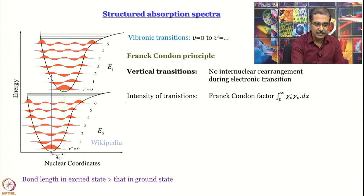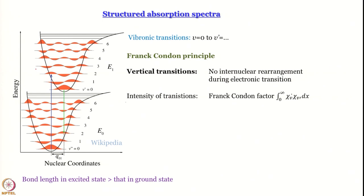This is the wave function of the target state. The Franck-Condon factor is basically this function multiplied by the ground state function for a given value of nuclear coordinate — you add them all up. Essentially, you multiply the two plots and find the area under the curve. This is how you calculate the Franck-Condon factor.